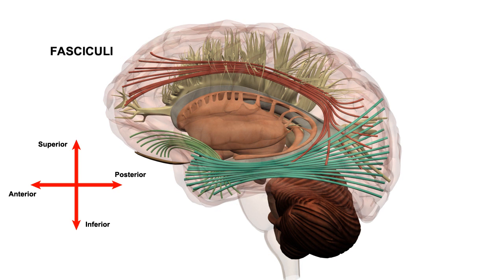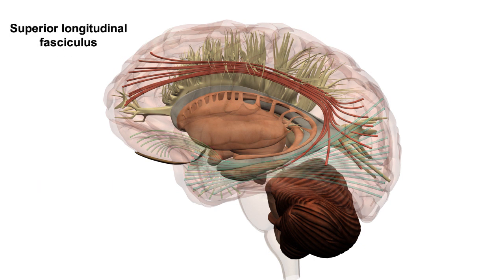Here we should look at four of the main fasciculi. The superior longitudinal fasciculus is a bi-directional bundle connecting the frontal lobe with the parietal and occipital lobes. Fibres pass round the posterior end of the lateral fissure and radiate out to innervate the cerebrum, as well as deeper structures such as the putamen and parts of the posterior temporal lobe.